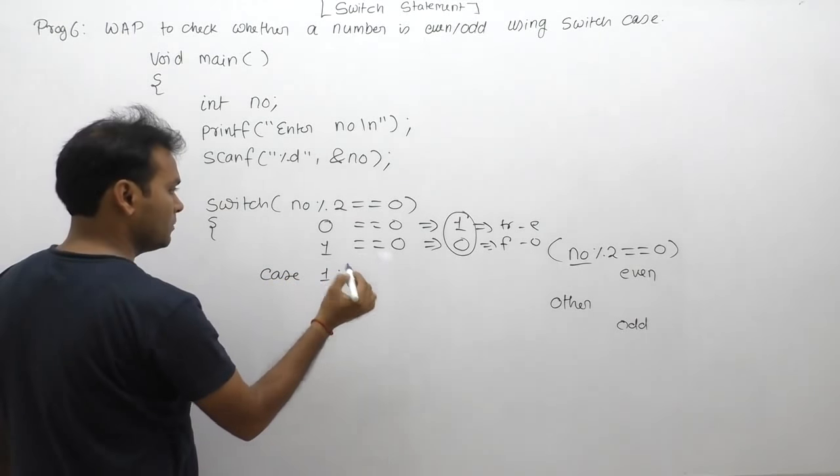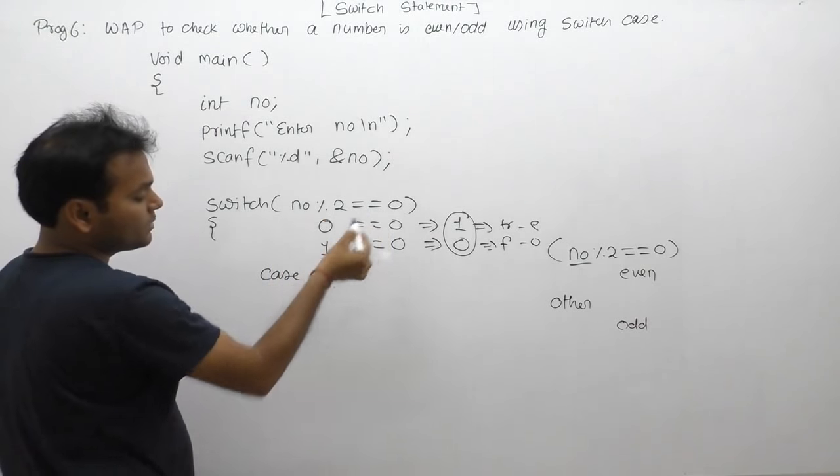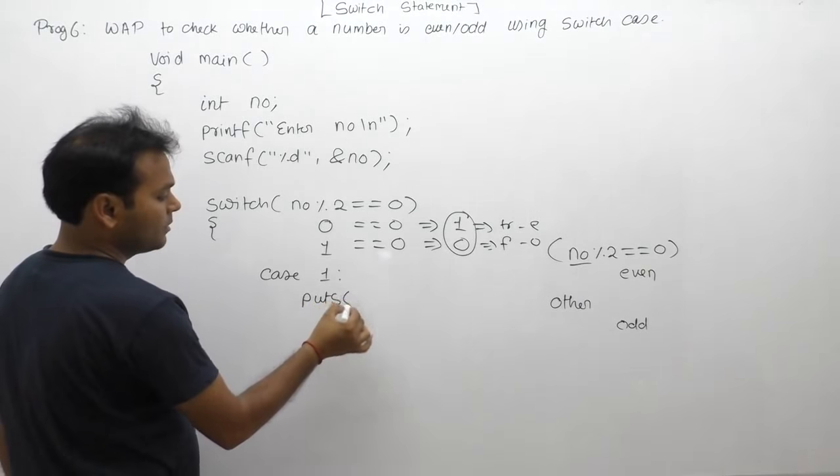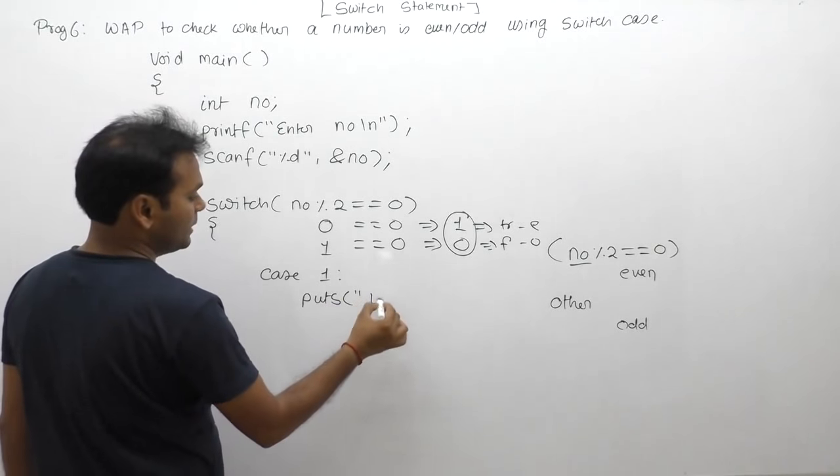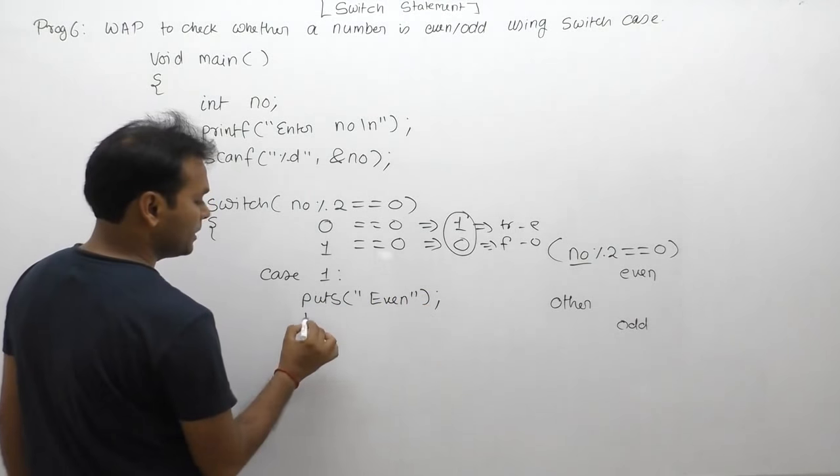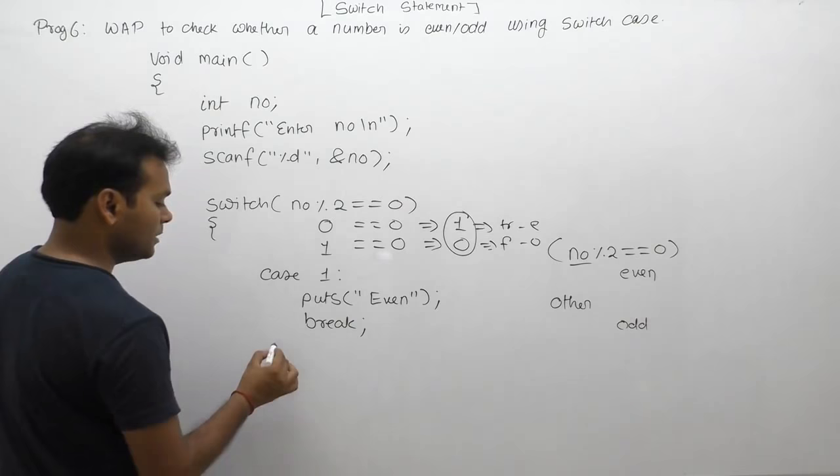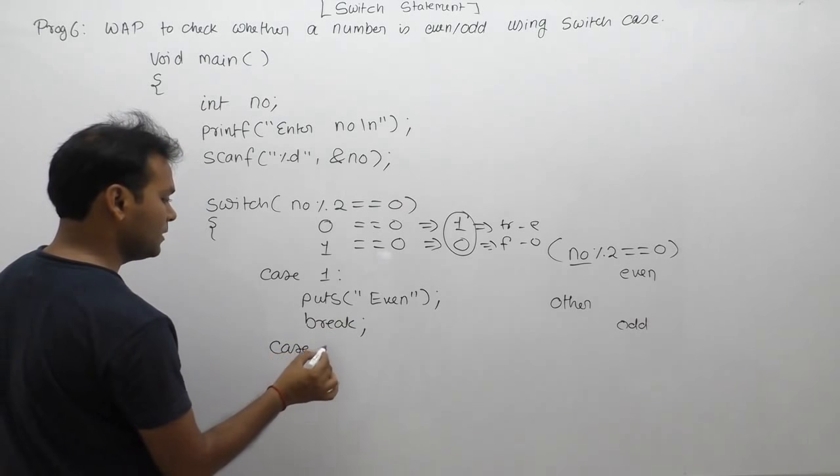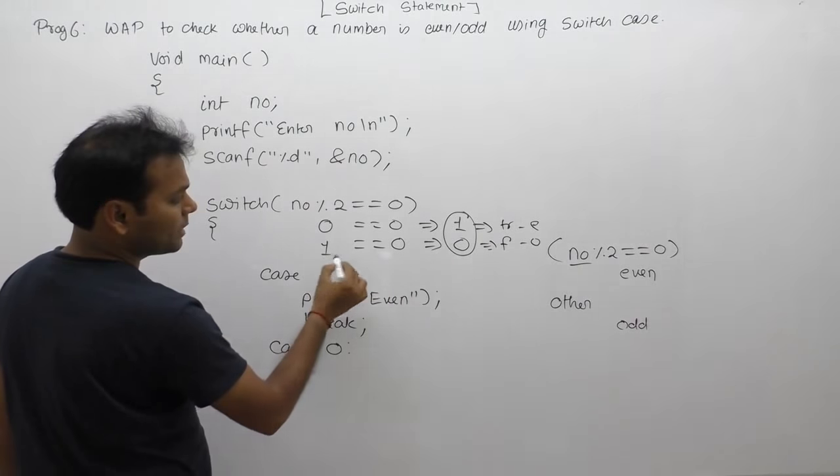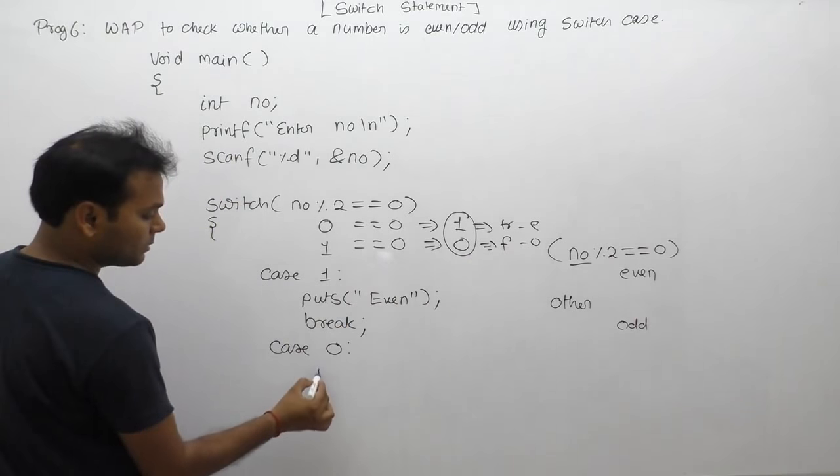'odd'. Case 1: when the condition is true, the corresponding message is printed. After that, use a break statement. Case 0: the other possible case. In case of odd number, the corresponding message 'odd' is displayed.